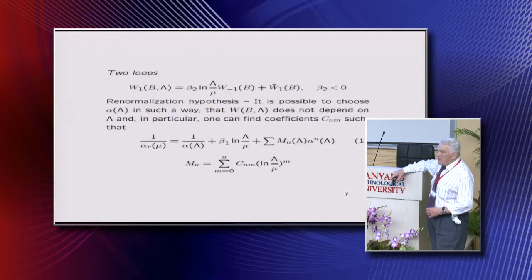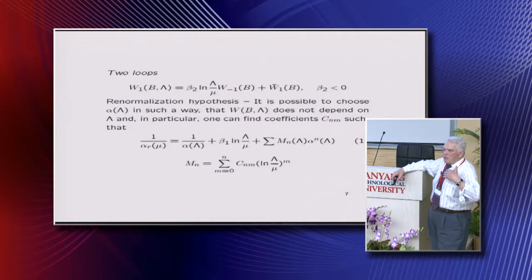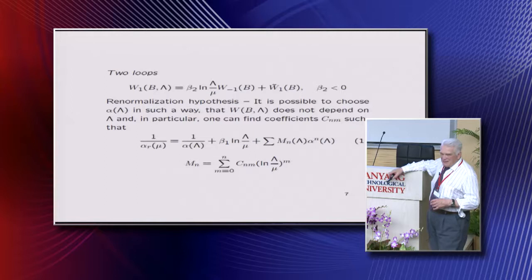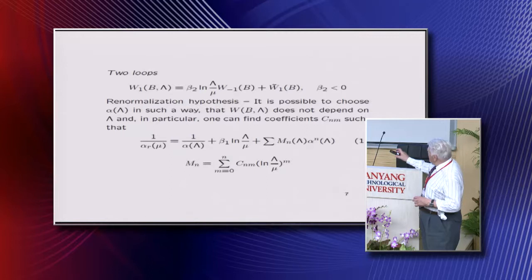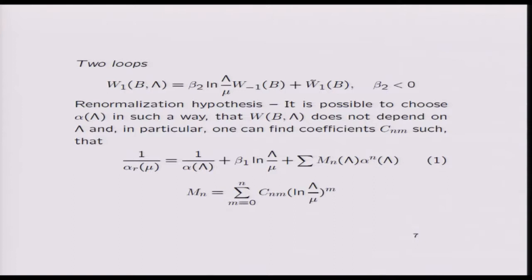Well, if you go to two loops, then something happens, namely that two loop also, one could expect that two loop will get contribution proportional to square of logarithm. No, it has only linear term, with another coefficient, beta_2, which is also negative, and instead of 11, we have 17, something strange, these simple numbers. But this is the result.